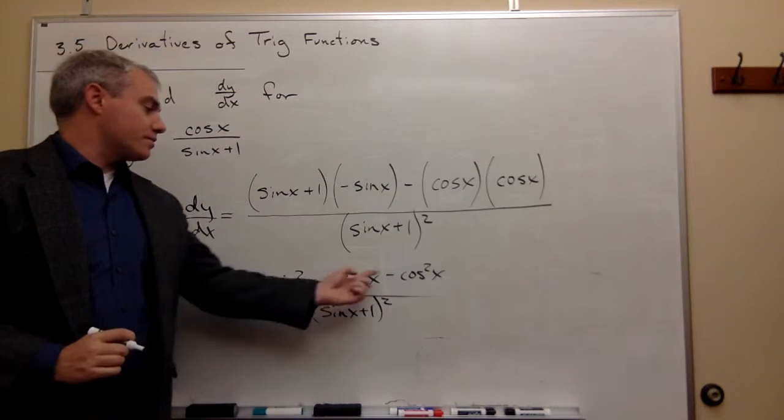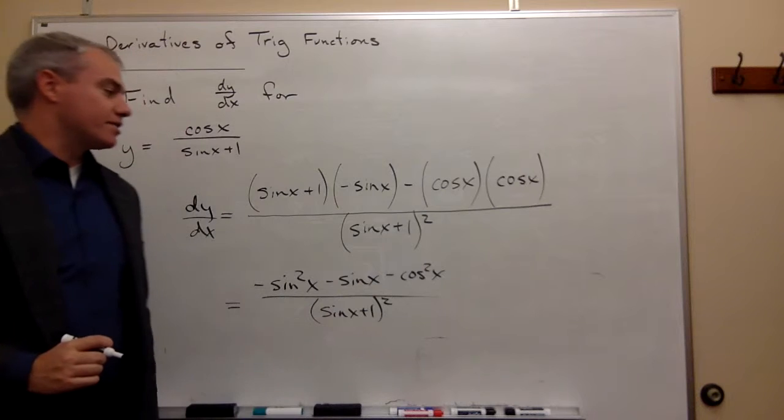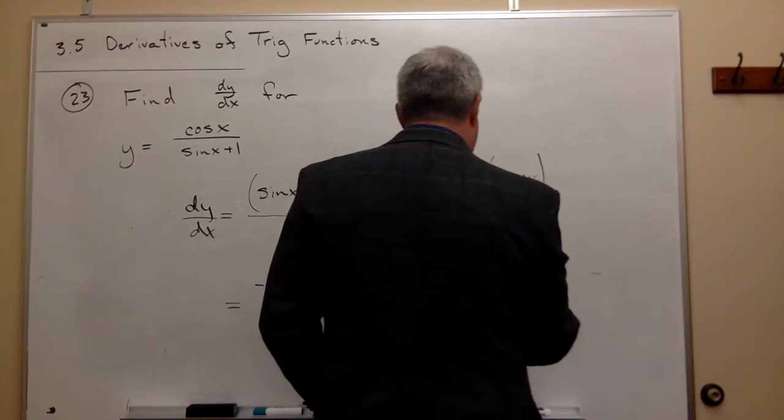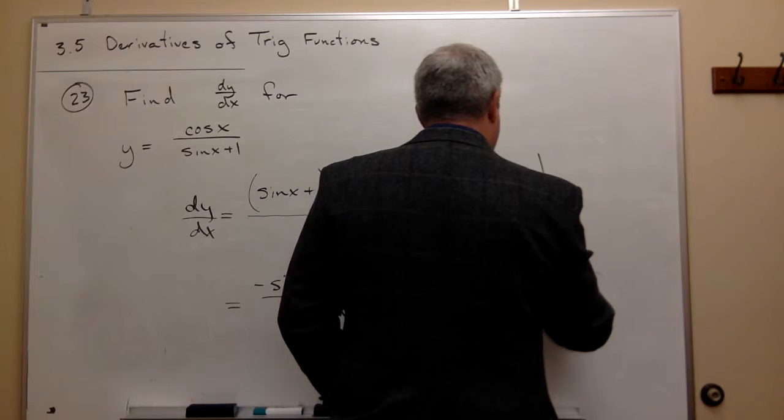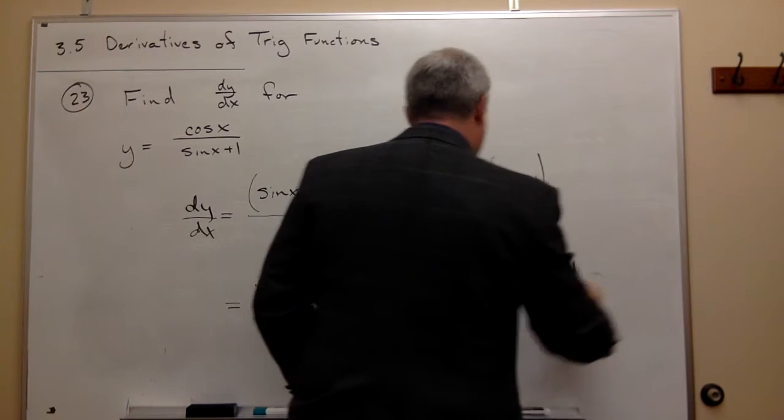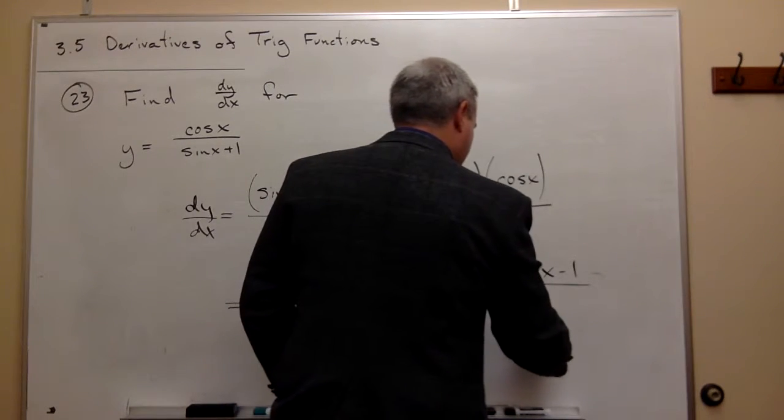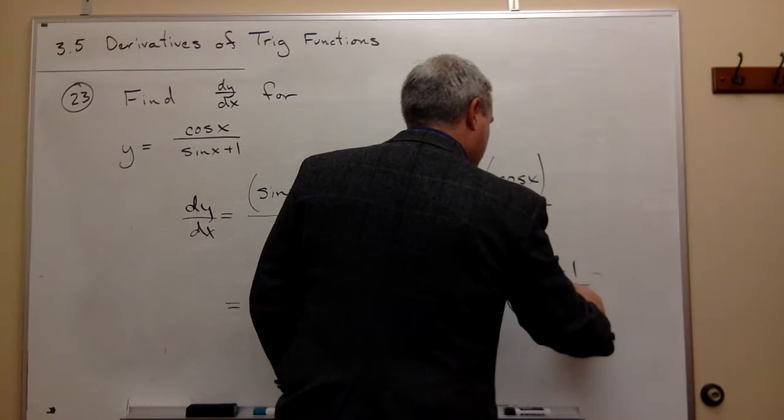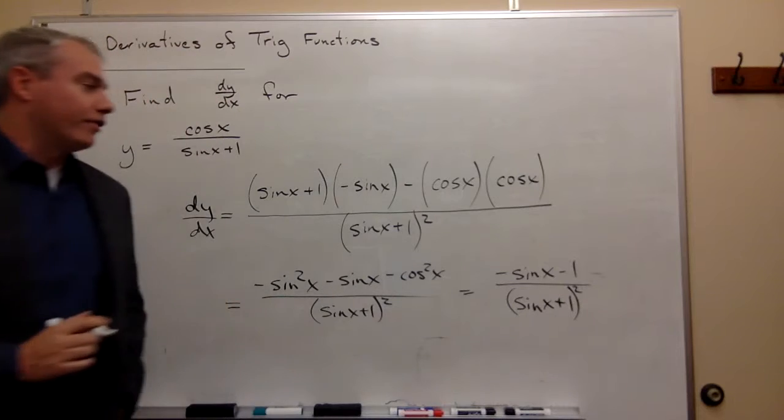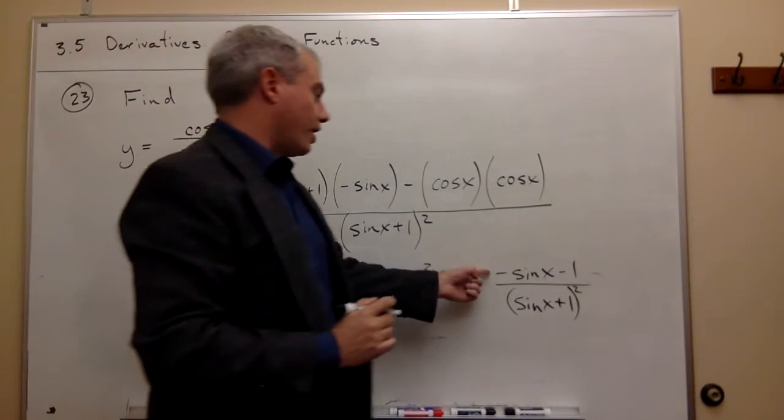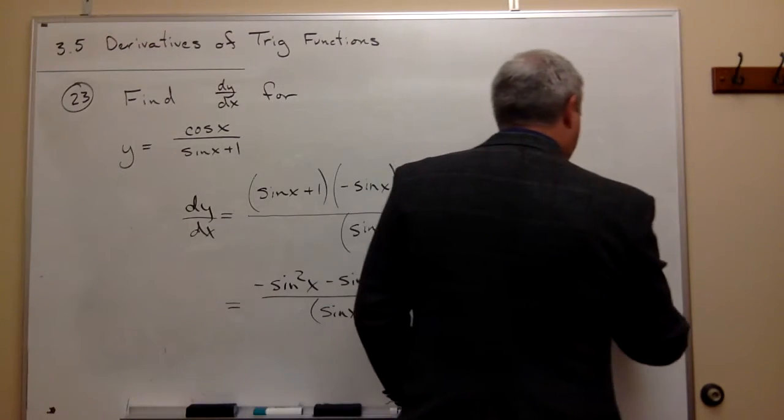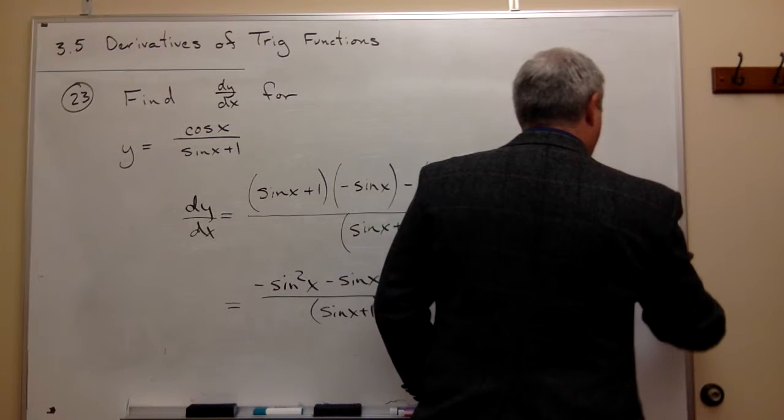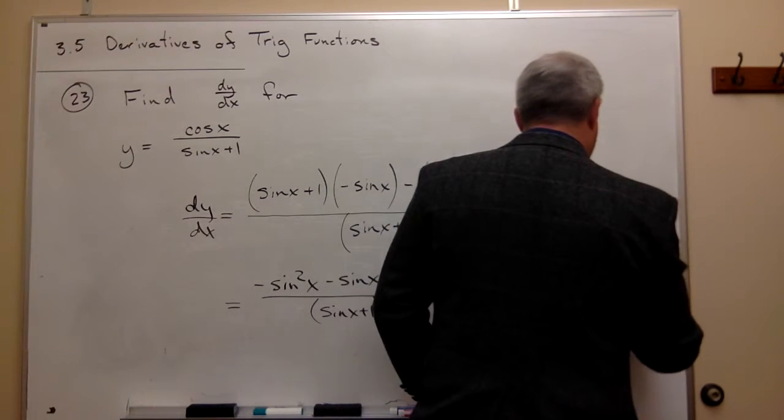Well, negative sine squared x minus cosine squared x is negative 1. So I could just write this as negative sine x minus 1 divided by sine x plus 1 squared. And if I really wanted to get fancy, I could factor out a negative 1 on top and write this as minus sine x plus 1 over sine of x plus 1 squared.